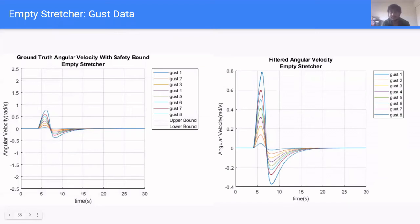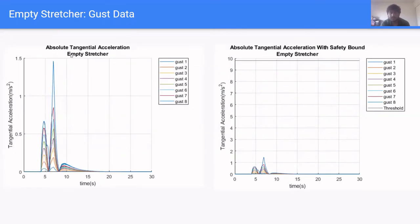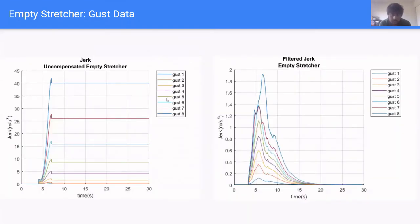We are showing the results for gust k on the empty stretcher, since the empty stretcher should be the worst case scenario. As you can see, the root 2 angular velocity is under safety powers. We are showing filtered angular velocity here because PID controller uses it as input to control the system. That is also under safety powers. The radial acceleration of empty stretcher is also under safety power for this case scenario. Same as absolute tangential acceleration. For jerk, it is kind of hard to analyze with this graph, so we use moving average with downsampling to smooth it out. So here is the result. As you can see, the empty stretcher for compensated case is much lower than uncompensated case.